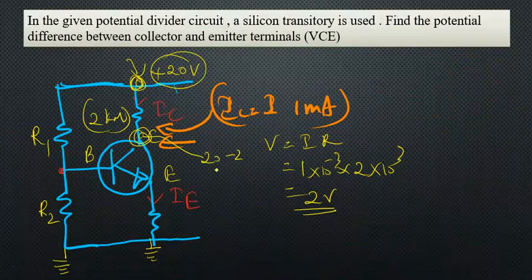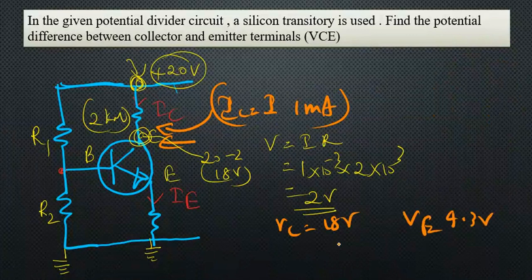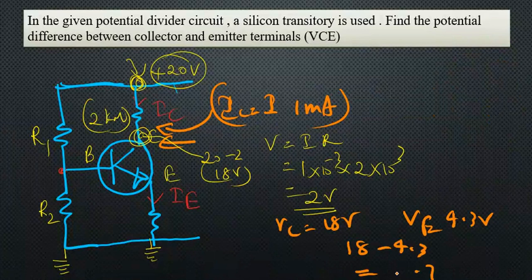Now we have two potentials: VC is 18 volts and VE is 4.3 volts. Now you know what to do: 18 minus 4.3 equals 13.7 volts. You can conclude this as VCE potential. So our answer is VCE equals 13.7 volts.